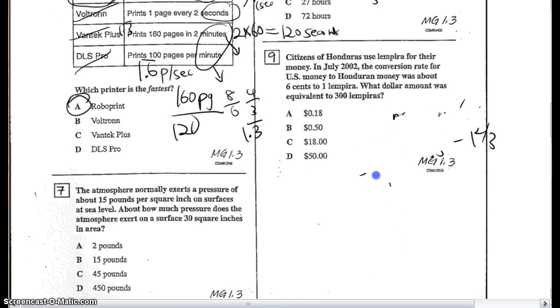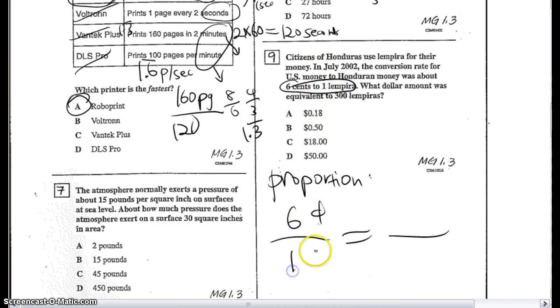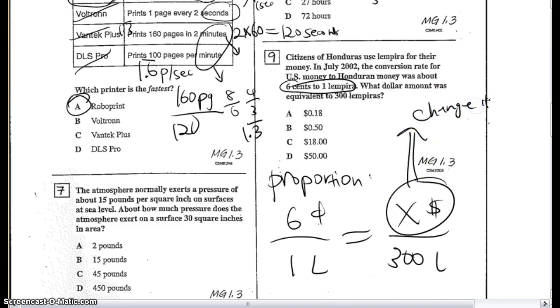Okay, for number 9, you're going to set your problem in a proportion. So we're going to create these two fractions and make them equal to each other. Based on the amount of money that they're converting, we've got 6 cents for 1 lampier. So that's 6 cents for 1 lampier. And I want to know how much dollars for 300 lampiers. So when you get your answer here for X, whatever you get, you need to change it to dollars. Okay, so whatever you get in your calculator, you should get 1,800. 1,800 pennies is the same as how many dollars? Yeah, let's see, $18. There we go.